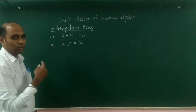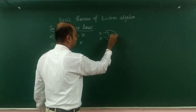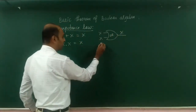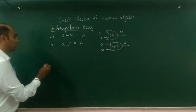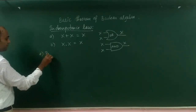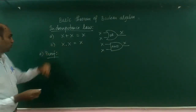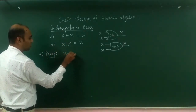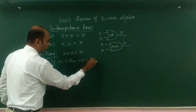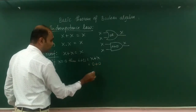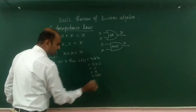For both expressions we draw logic gates. For X OR X we draw an OR gate with the result X. For X AND X we draw an AND gate with result X. Now to prove expression A: X OR X equals X. If X equals 0, then LHS is X OR X. Substituting gives 0 OR 0, which is 0. 0 is X, that is RHS. Hence the proof.